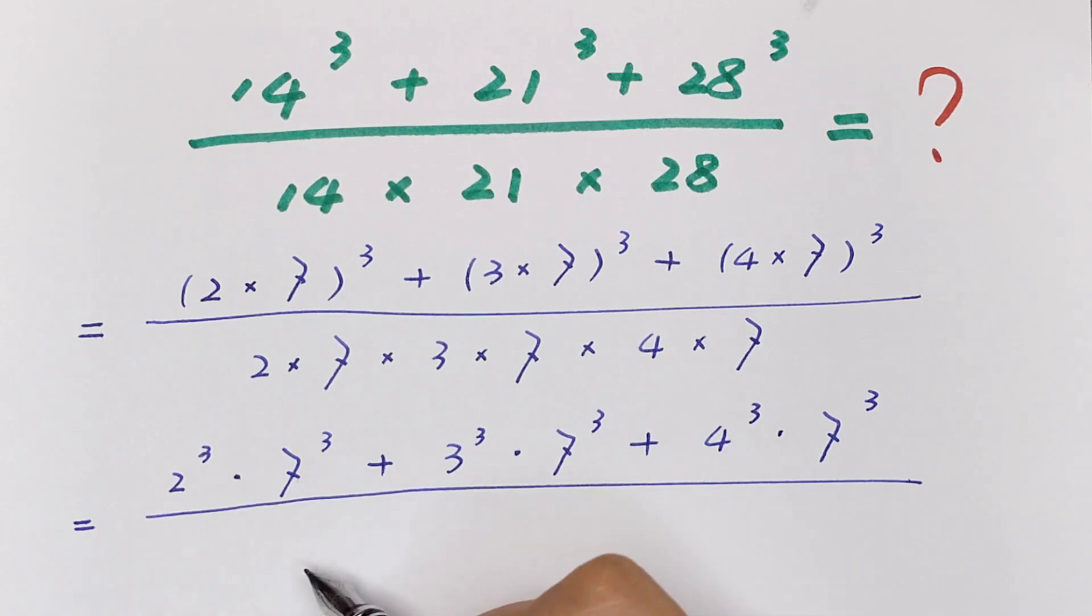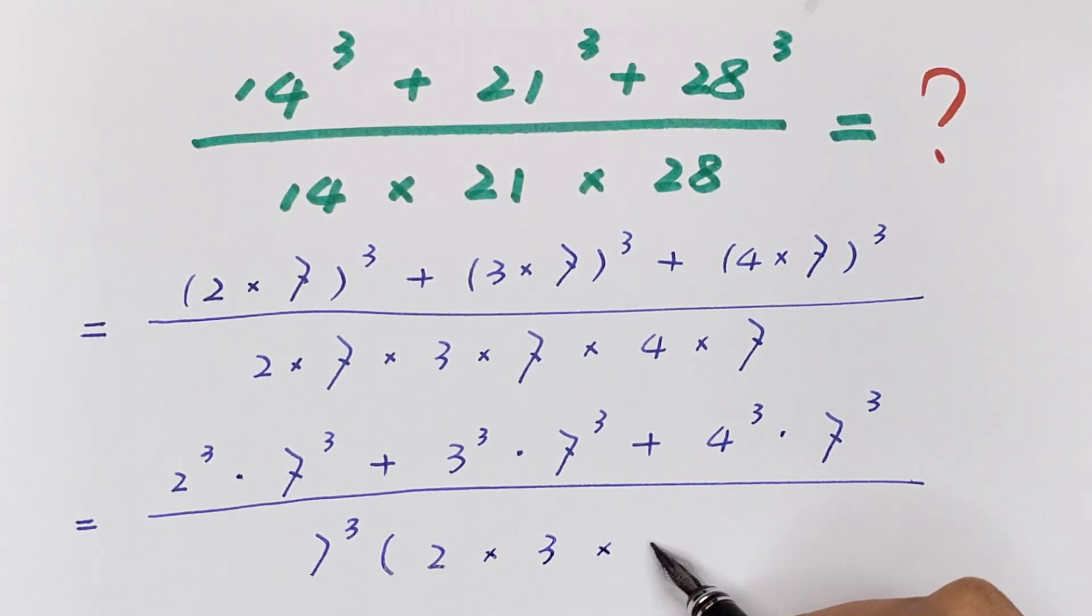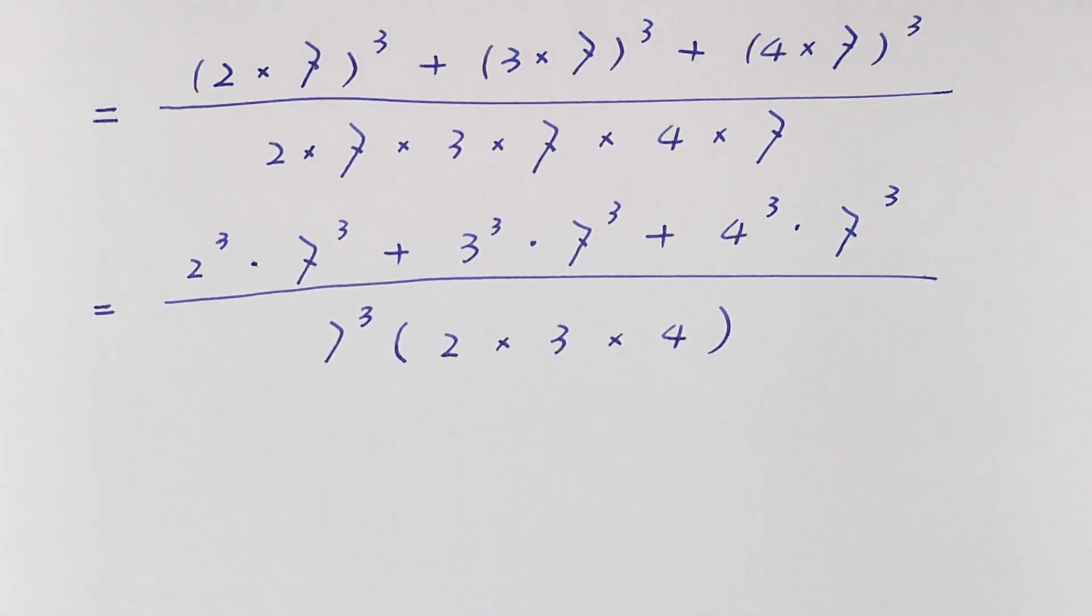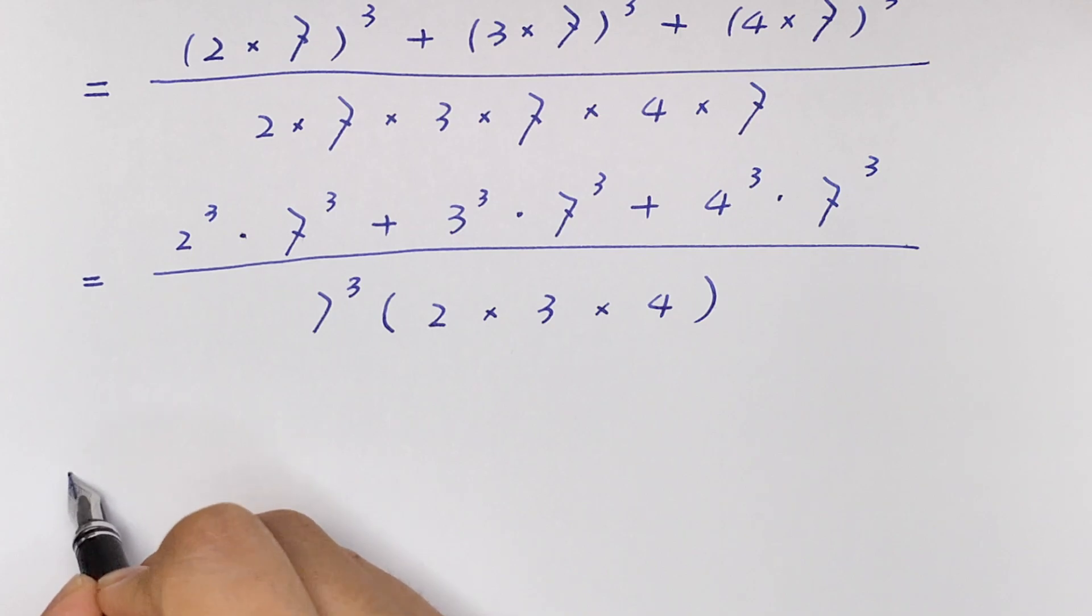Over 7 × 7 × 7, which is same as 7³ × (2 × 3 × 4).